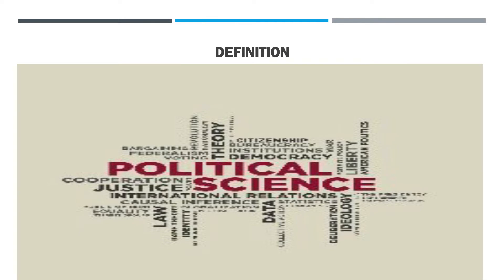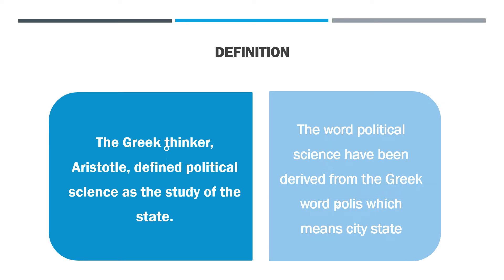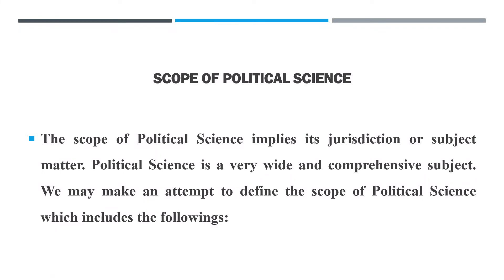In today's discussion, as I already told you, we will be covering definition and scope of political science. Please note down this definition. Let's move towards scope of political science. The scope of political science implies its jurisdiction or subject matter. Political science is a very wide and comprehensive subject. We may make an attempt to define the scope of political science, which includes the following aspects.